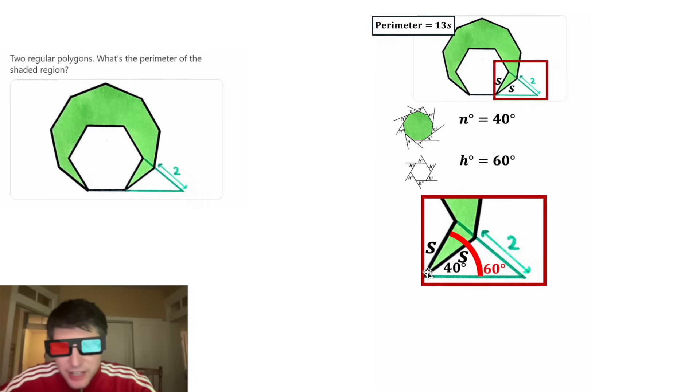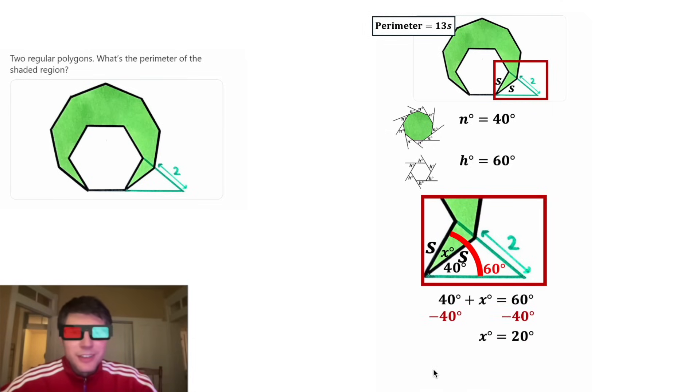And we don't know the size of this green piece, so let's call it X degrees. But we do know that the 40 degrees plus the X degrees needs to equal this entire thing, the 60 degrees. After we subtract 40 degrees from both sides, we'll get X is equal to 20 degrees. So we can update this angle to be 20 degrees.